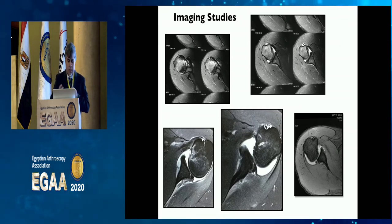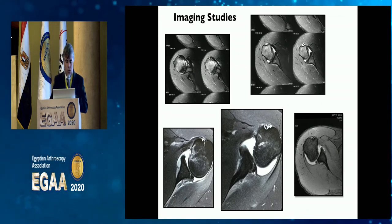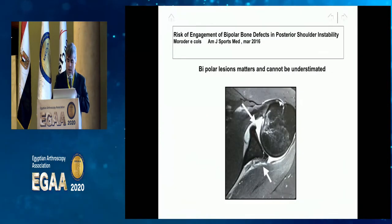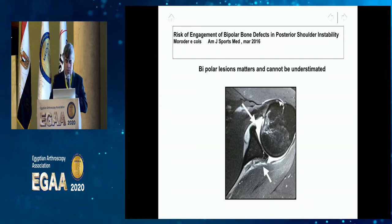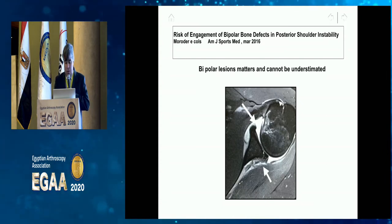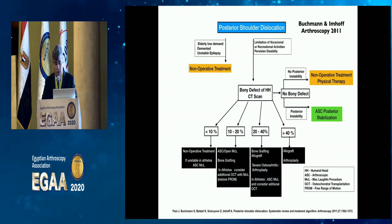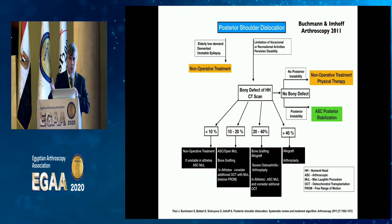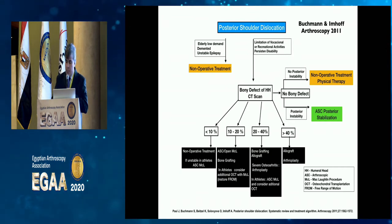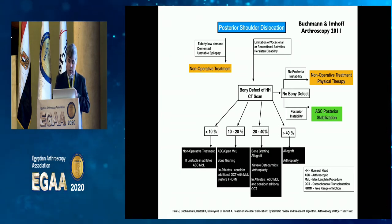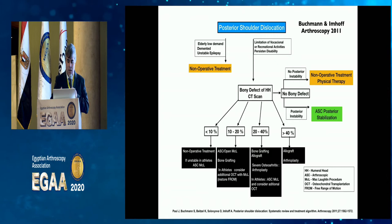MRI is the gold standard for evaluating labral damage and capsular attenuation. CT scan works well for assessing retroversion. We must look for bipolar lesions — a small Hill-Sachs lesion anteriorly and a small labral lesion posteriorly. Philippe Moroder's work suggests we should address both sides. Imhoff's algorithm for posterior shoulder instability centers the treatment on the bone defect — specifically the reverse Hill-Sachs lesion — in both the humerus and glenoid.